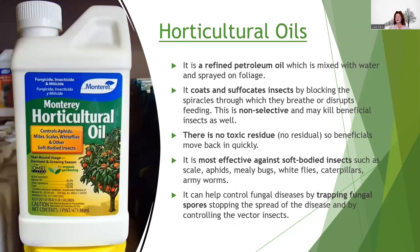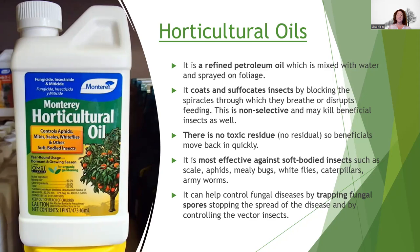Horticultural oils are a refined petroleum product, generally mixed with water and sprayed on foliage. They coat and suffocate an insect by blocking the spiracles — those little holes on the sides of the insect's abdomen that are how they breathe. Basically you're choking them to death. It's non-selective though, so it can kill other insects — be wary of when you're using it, probably after pollinators have gone away for the evening. This is effective against most soft-bodied insects and can also help trap fungal spores.